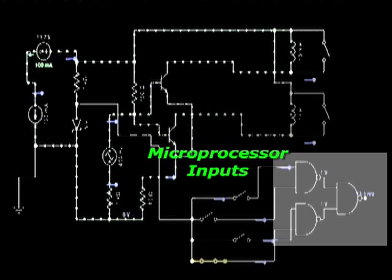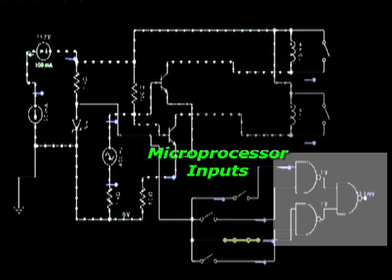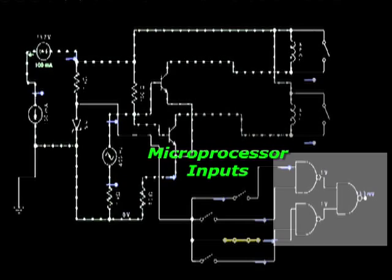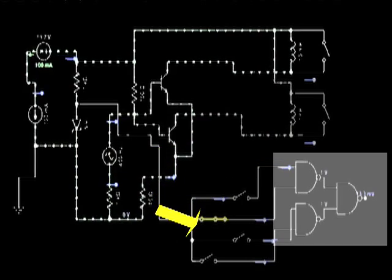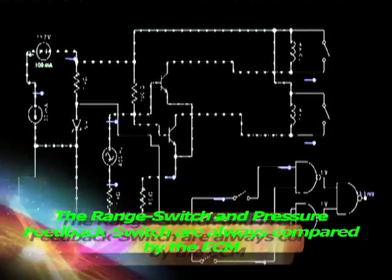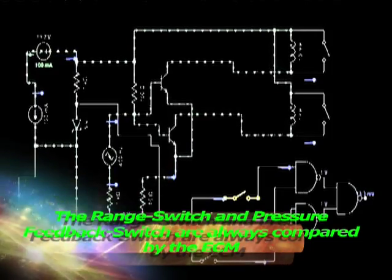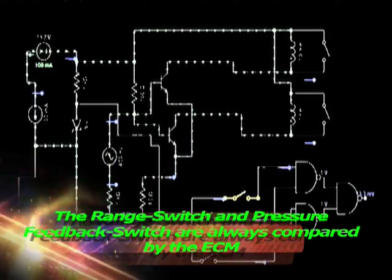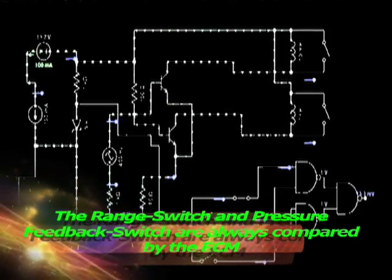The ECM microprocessor at the far right expects to see a specific switch on and off combination, which it compares to the transmission range switch. If the shift lever is set to drive and the pressure switch combination, also called a truth table, says First Gear...